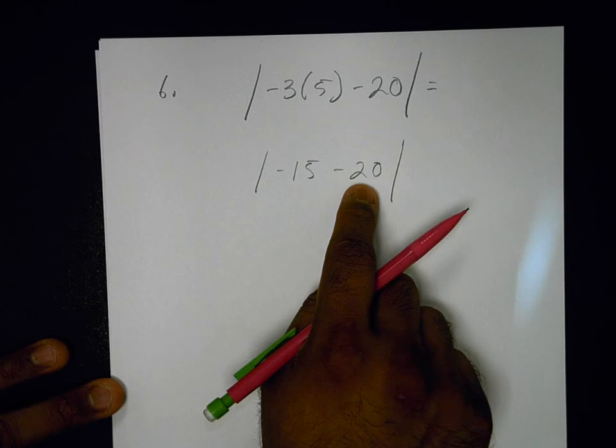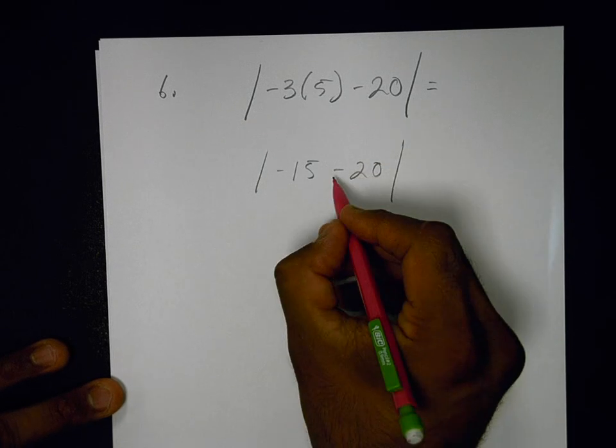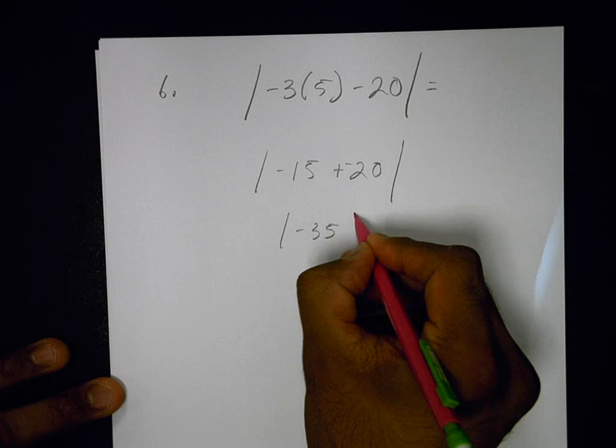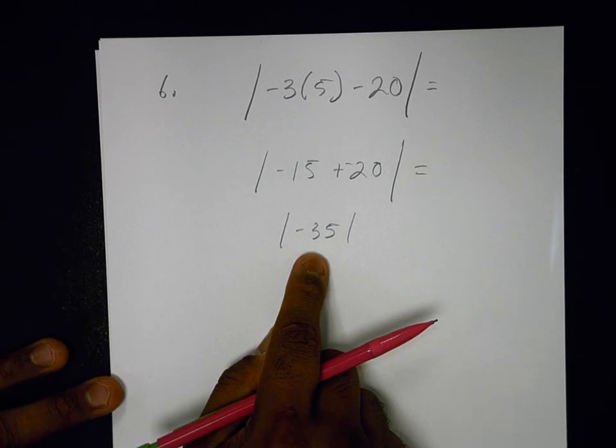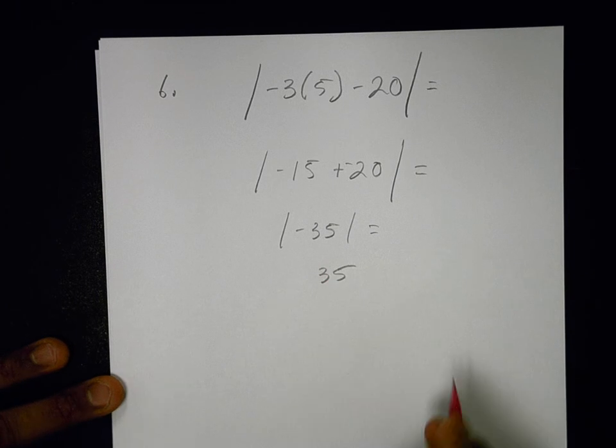This is just combining like terms inside of here. I could think of it as plus negative 20. So that's negative 35. And then I ask myself, how far is negative 35 from 0? And it would be 35 spaces.